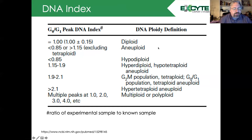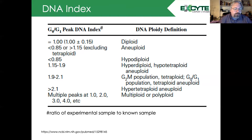Between 0.85 and about 1.5 we can have an aneuploid population, which is very interesting for those studying cancer. We can also measure hypo or hyperdiploid populations. A ratio of about 1.9 to 2.1 is typically our G2M phase but can represent tetraploid populations. We can also have multiple peaks if we have a multiploid or polyploid population, which is normal in certain developmental processes such as in plants. When doing one-parameter cell cycle analysis, it's important to add a control of known DNA concentration such as CENs or TENs to standardize your assay and characterize your populations.